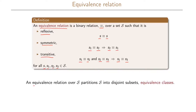An equivalence relation over a set S partitions this set S into disjoint subsets, and these disjoint subsets are called equivalence classes.